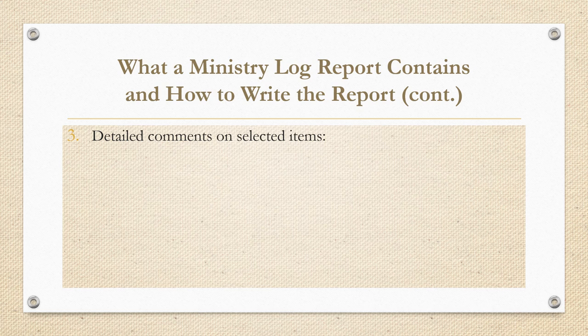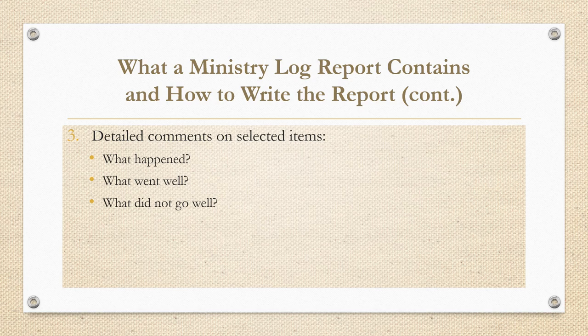Here's the third component part: detailed comments on selected items. Students will select two items from the list compiled in the background section to write a more detailed report. Those include what happened, what went well, what did not go well, and theological reflection. Additional comments can be added if you so choose.